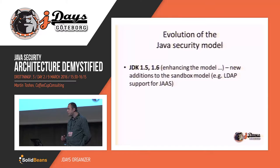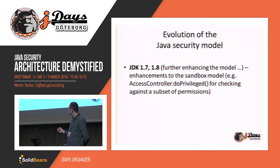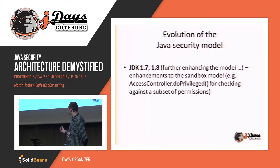Moving towards version 1.5 and 1.6 of the Java platform, there are just some slight enhancements of the security model — for example, LDAP support was provided for JAAS. In version 1.7 and 1.8, a few more enhancements were made, such as calling AccessController.doPrivileged() and also specifying a subset of permissions that are allowed for the currently executing source code. In previous versions of Java, calling AccessController.doPrivileged() would effectively strip away any permissions of the calling source code. However, in version 1.7 you can specify also a subset of permissions against which you want to escalate privileges.